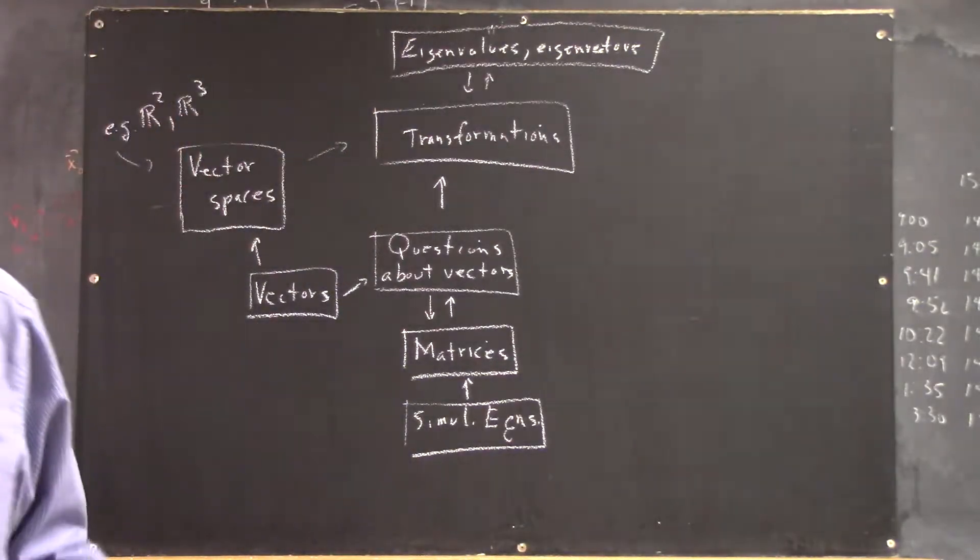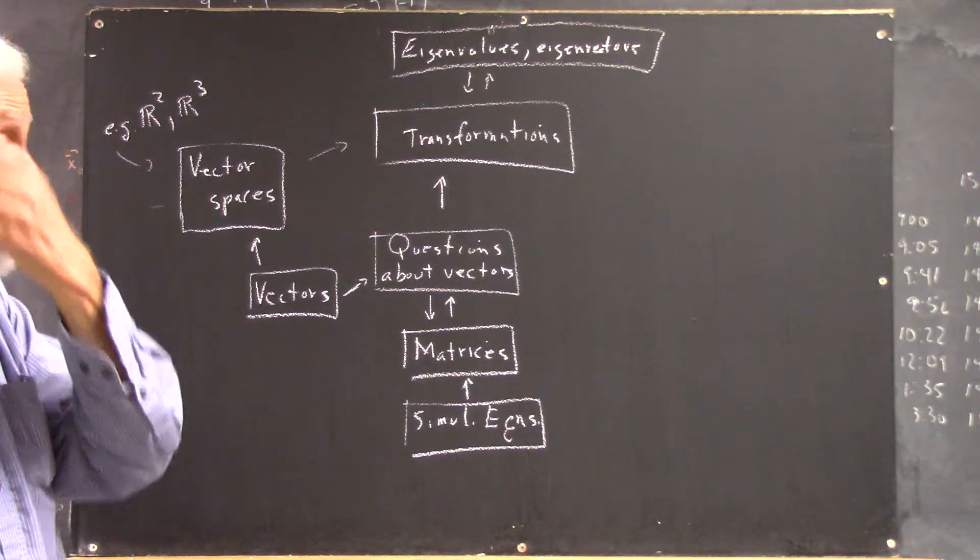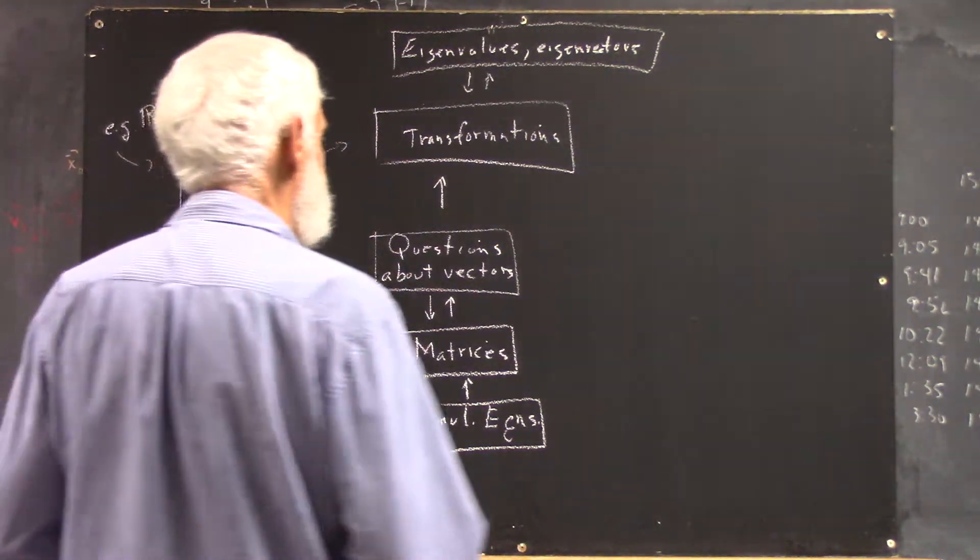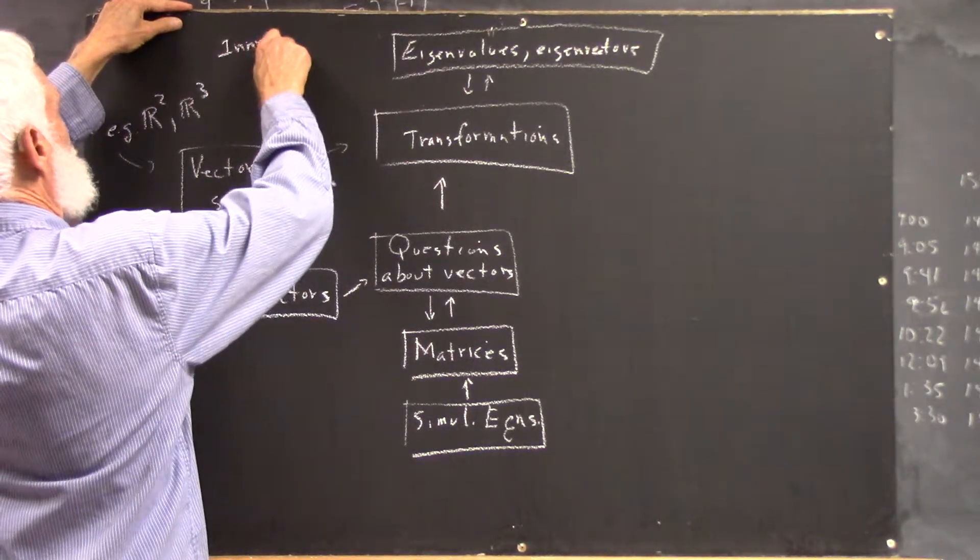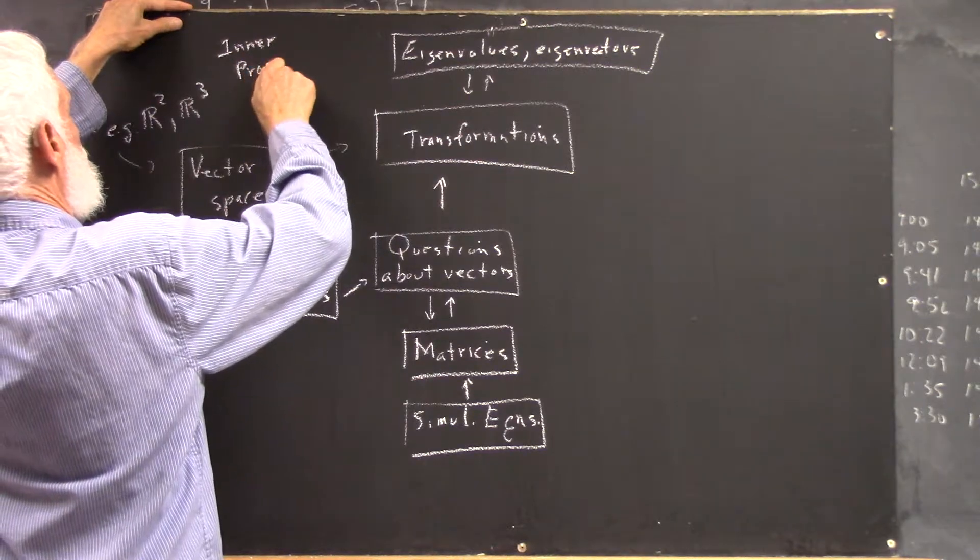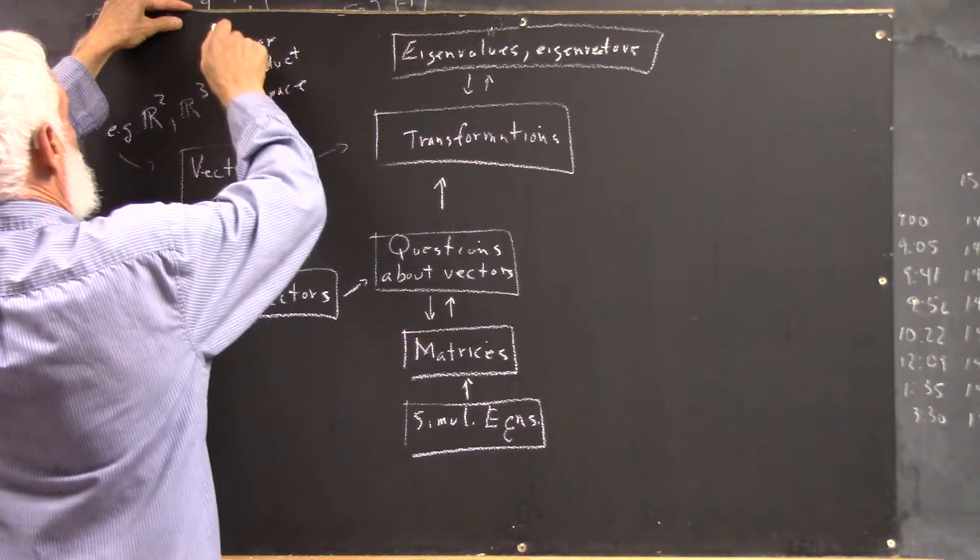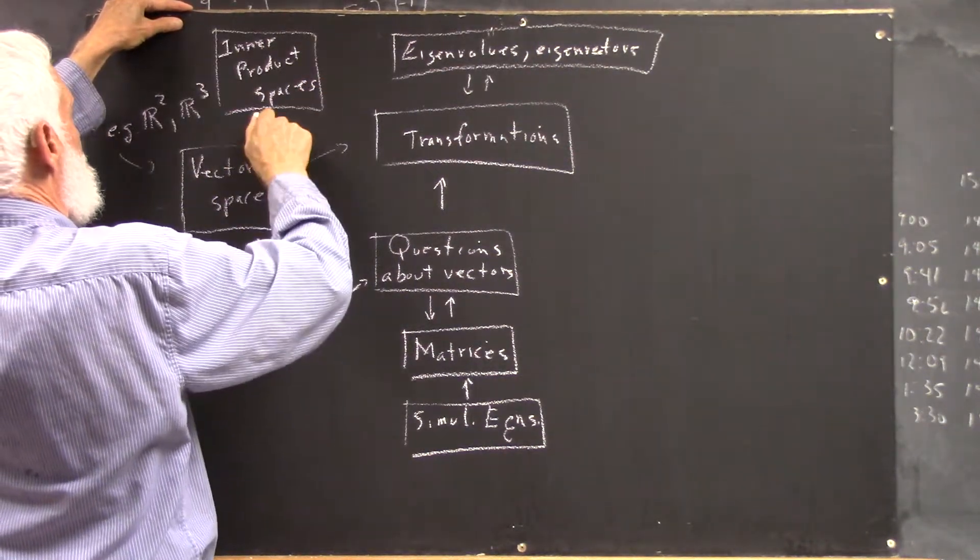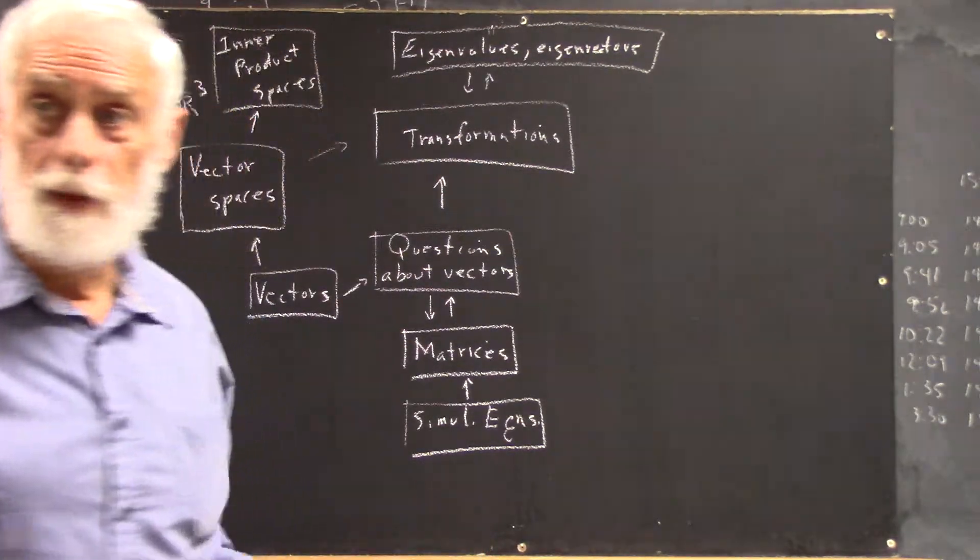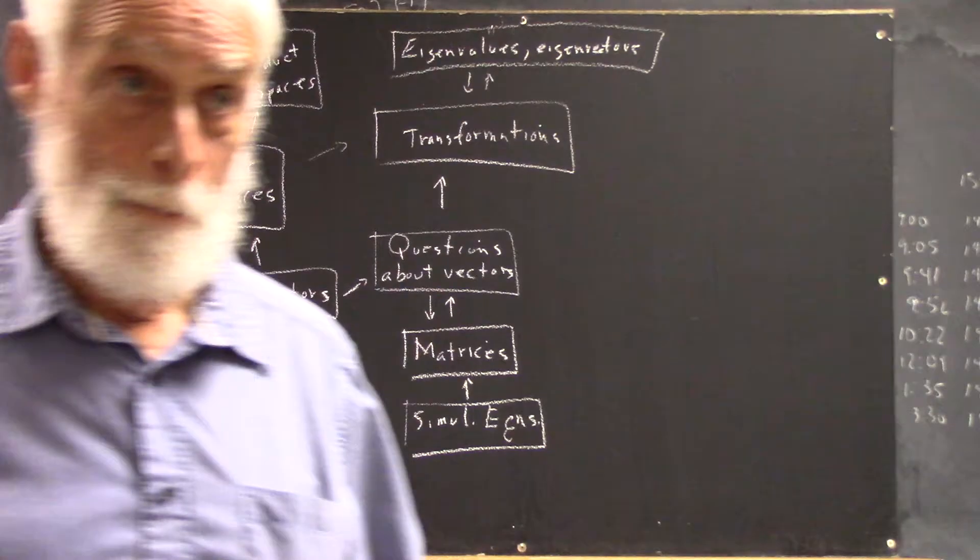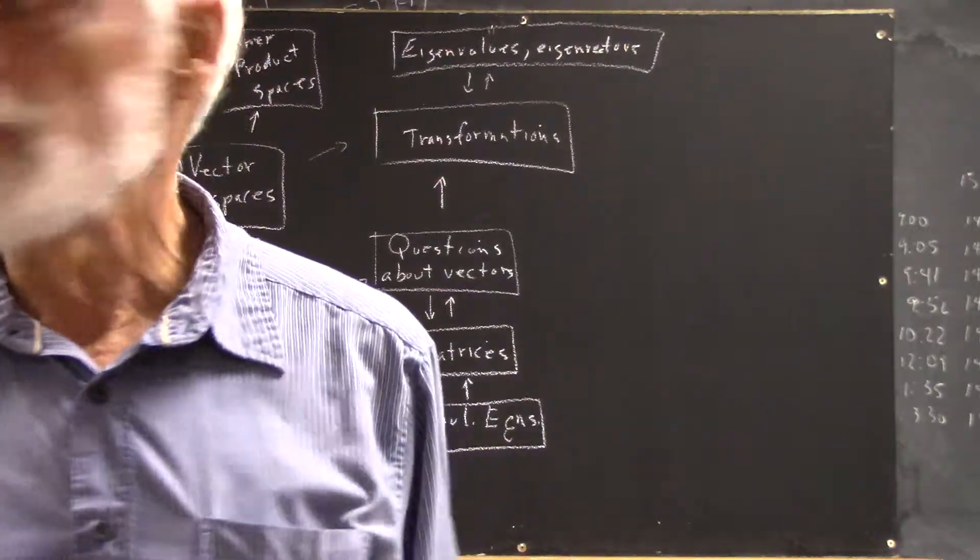And there's only one topic that we haven't covered, and we'll kind of piece away at that a little bit each day. It's fairly simple. It's inner product spaces, which are special kinds of vector spaces that you can measure things on. Now, the vector spaces R2 and R3 are inner product spaces. But there are vector spaces that aren't.